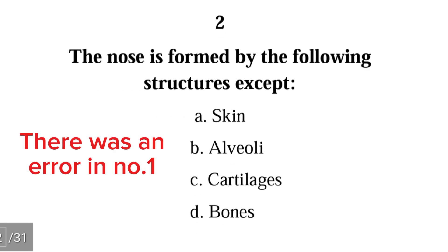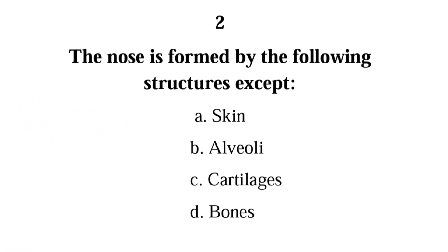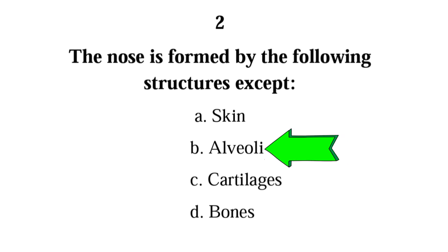Number 2. The nose is formed by the following structures except: skin, alveoli, cartilages, bones. The correct answer is B, alveoli. Alveoli are not tissues of the nose; they are tissues of the lungs.